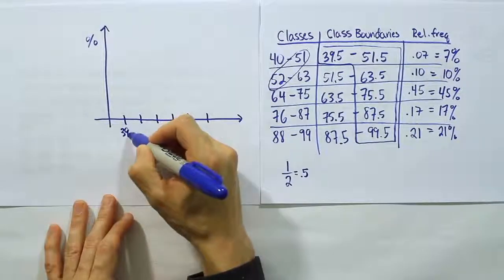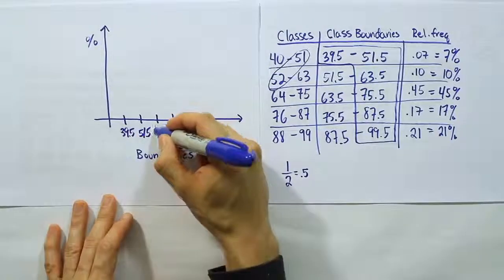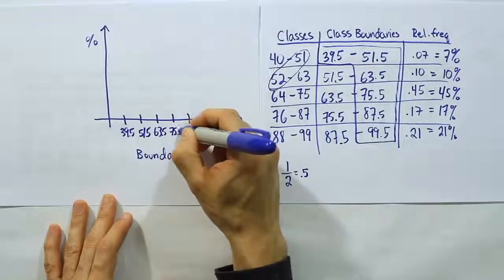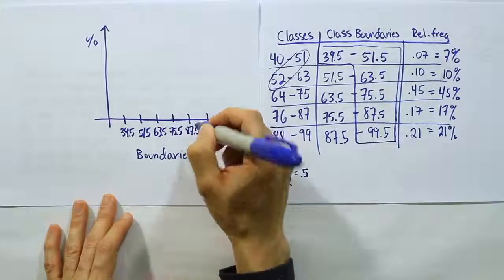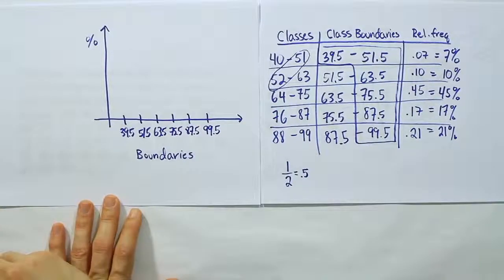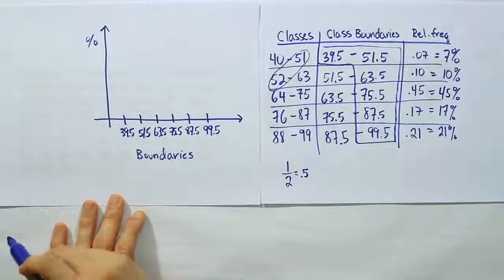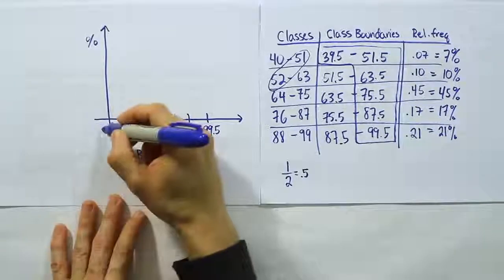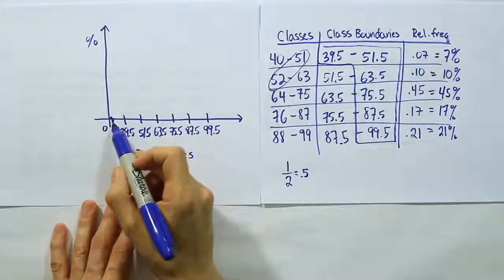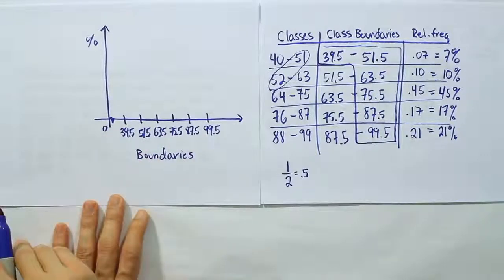Now that I have those all spaced out, I'm going to label them. Let's do 39.5, 51.5, 63.5, 75.5, 87.5, and lastly 99.5. So I've labeled the boundaries, just in order, starting with 39 and going all the way across to 99.5. This originally was started at 0, so I'm going to put a little mark here which indicates I chopped off part of the number line, so that we can start at 39 right here.